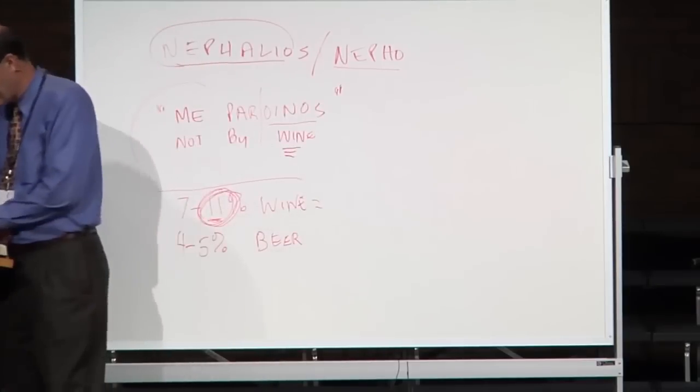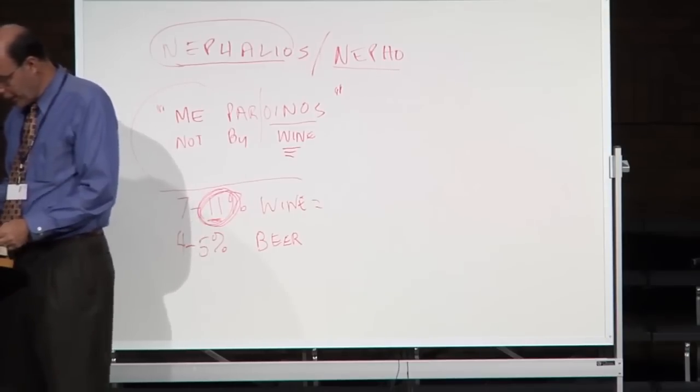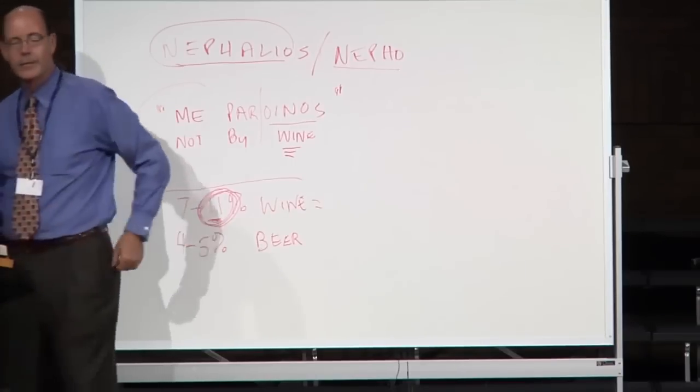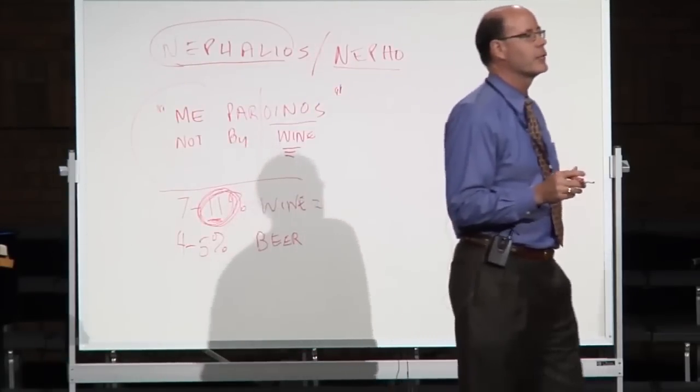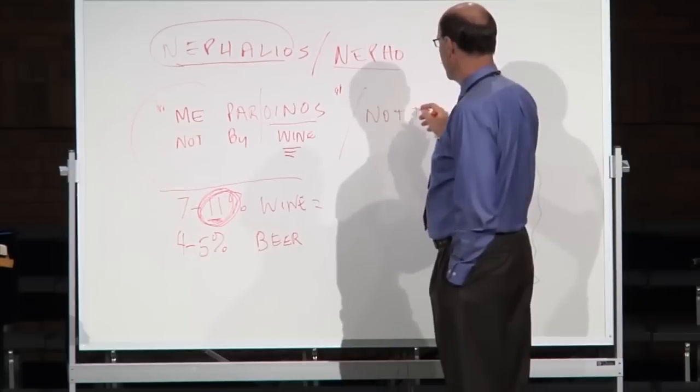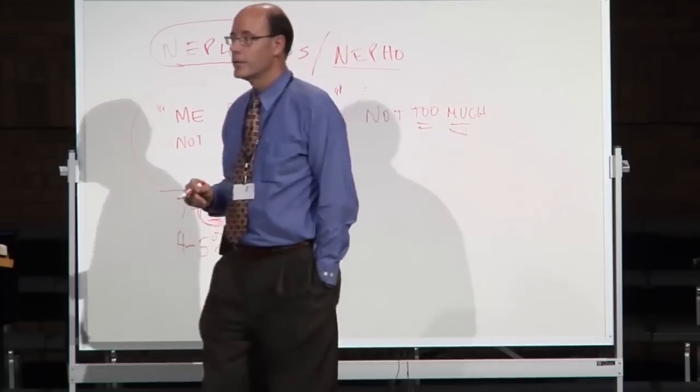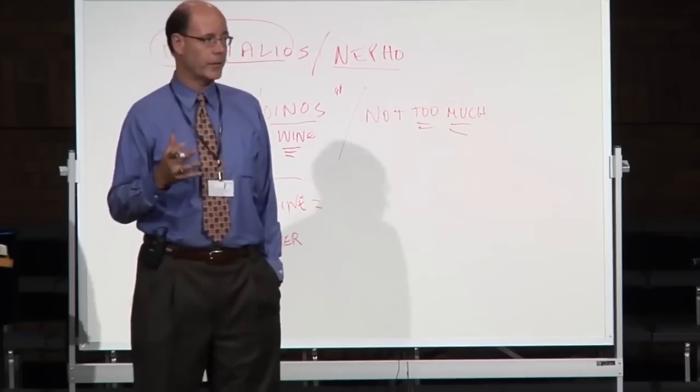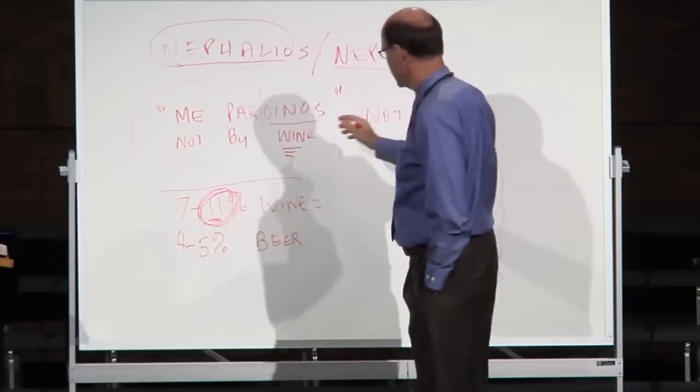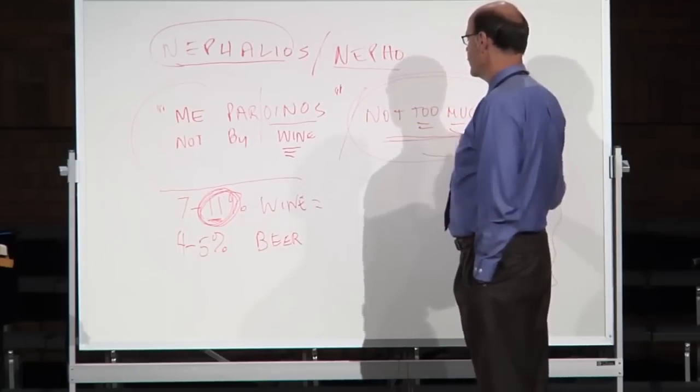They were supposed to be an example to the younger women to not allow themselves to have this external substance encourage them because life was hard back then. Basically, you can see that the elders had this higher calling. But look what it says when you get to deacons. Look at 1 Timothy 3. Likewise, the deacons, verse 8, must be reverent, not double-tongued, not given to much wine. That is not the same word. What it says is that they are not to be, and it's not me par oinos. It's actually not too much.